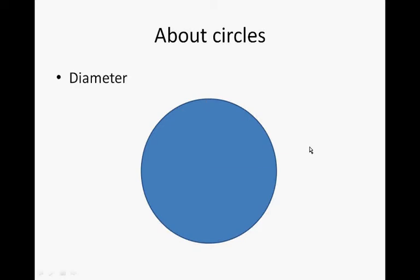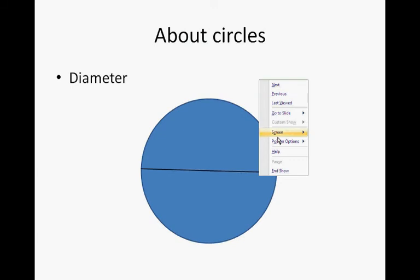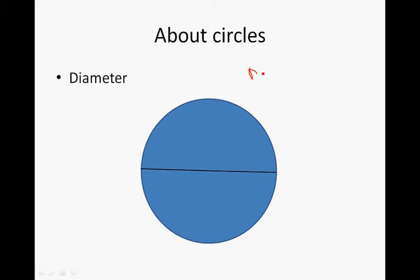Diameter. A radius plus a radius is called the diameter. Diameter is from one side of the circle through the centre to the other side. Or we can say, let's write it in pen, radius times 2 is called the diameter.